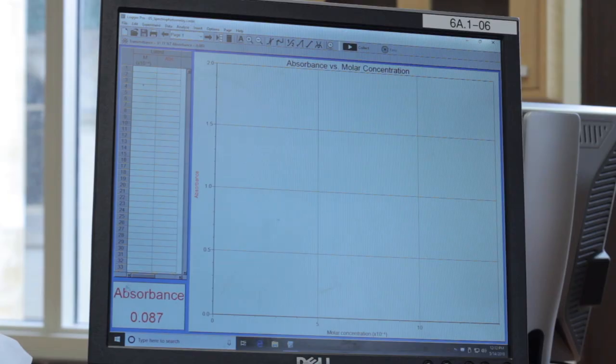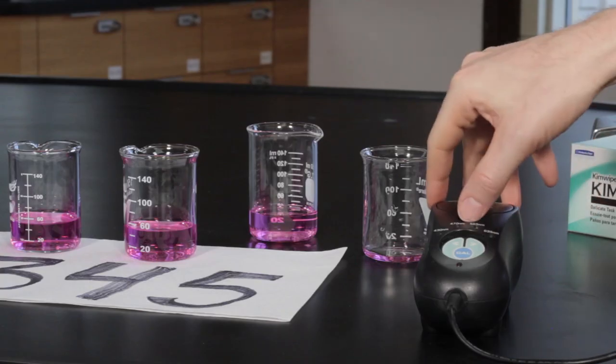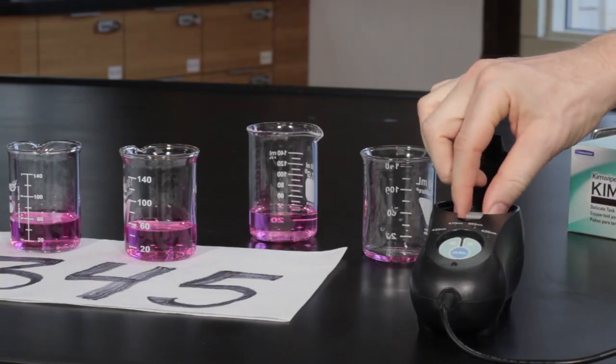Follow the instructions in your lab manual to collect the absorbance measurements in LoggerPro for solution 5. Remove the cuvette from the cell wall and discard its contents.